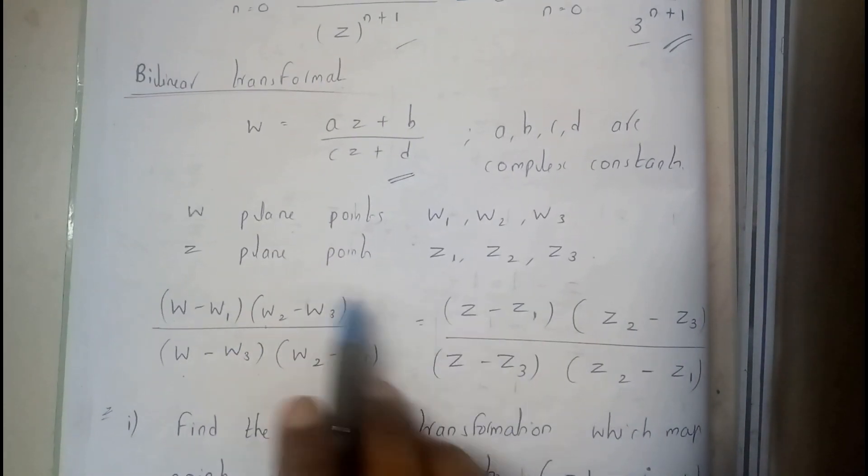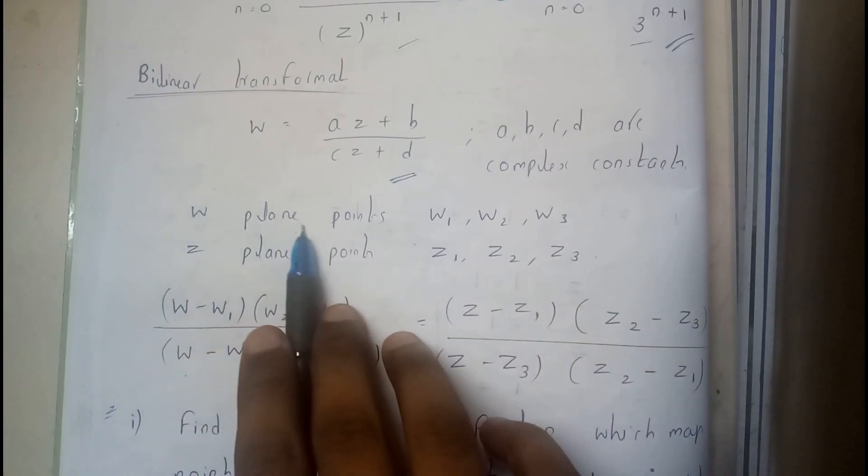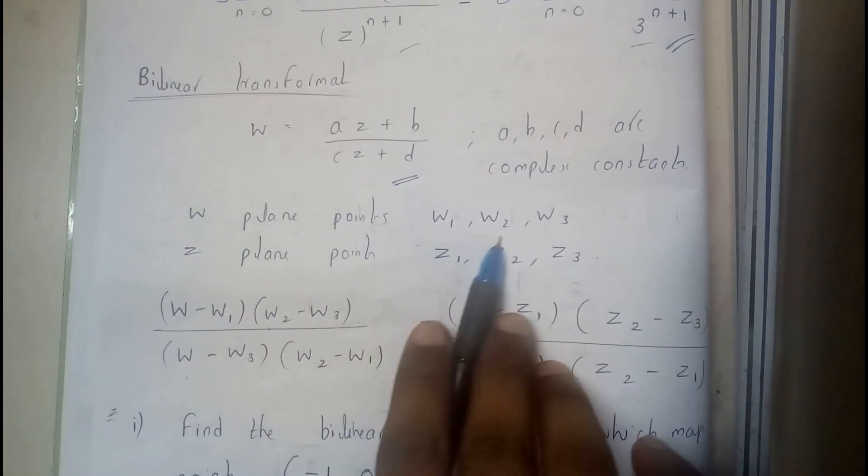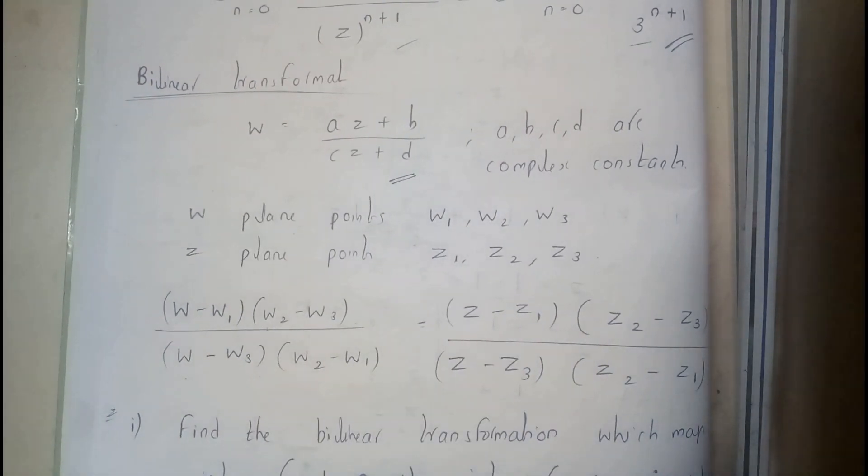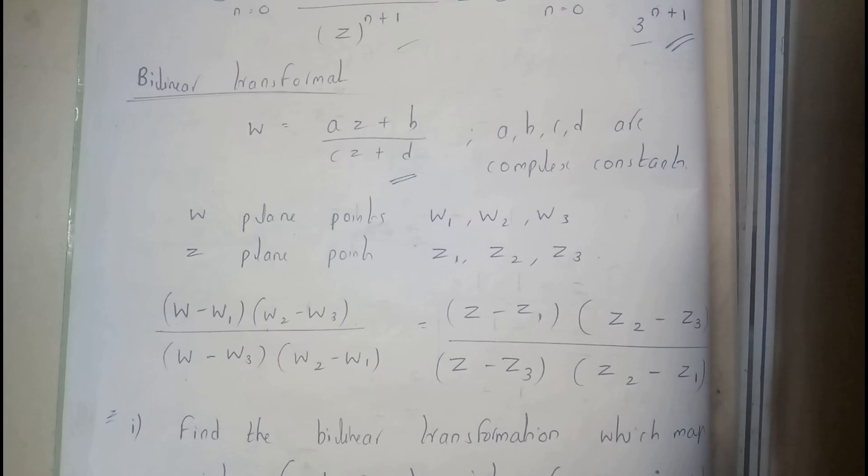Now you may ask me what is w and what is z? W plane points are w1, w2, w3. Z plane points are z1, z2, z3.